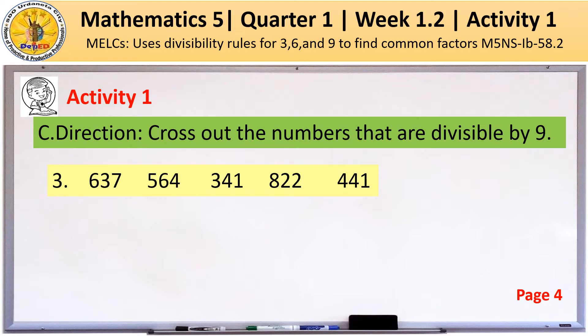So, the correct answer is 441. Why? Following the divisibility rule for 9, a number is divisible by 9 if the sum of all digits is divisible by 9.